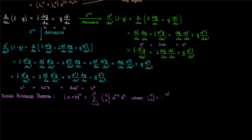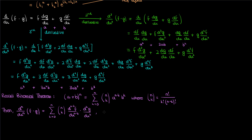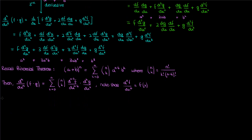Of course, n choose k is just n factorial over k factorial times n minus k factorial. Using the same binomial theorem logic, we can write the nth derivative of the product of f times g as the sum over k from 0 to n of n choose k times the n minus k-th derivative of f times the k-th derivative of g. Note that taking the 0th derivative of a function simply returns the function itself.